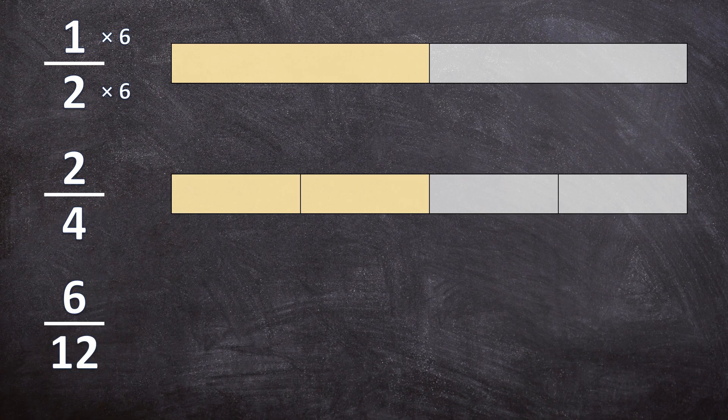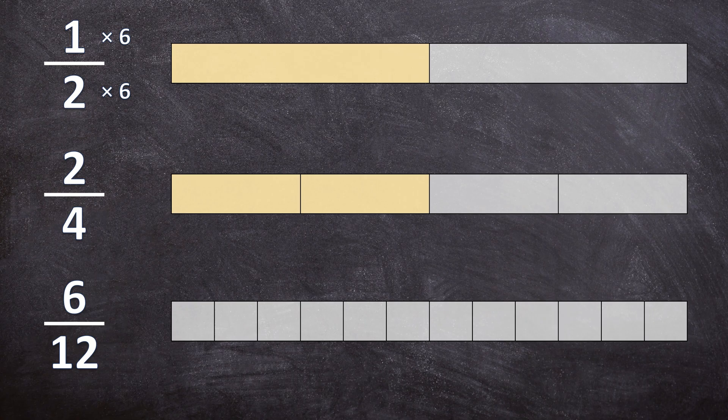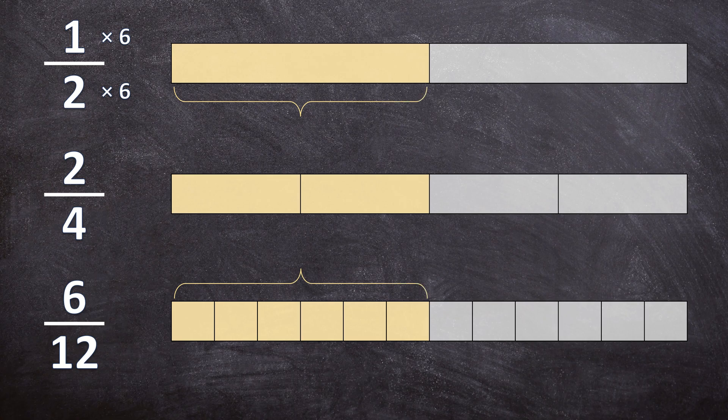One times six is six, over two times six is twelve. Now I have an identical shape but this time divided into twelve equal pieces, and I'm coloring in six of those twelve equal pieces. When I compare this fraction with the first fraction, the yellow parts are still the same size and the white parts are still the same size, so it's also the same value. This is also an equivalent fraction.